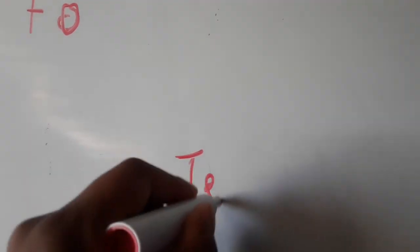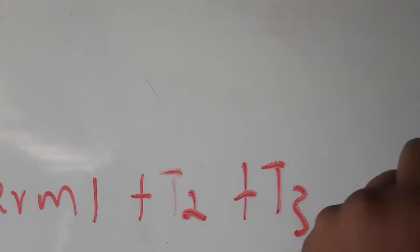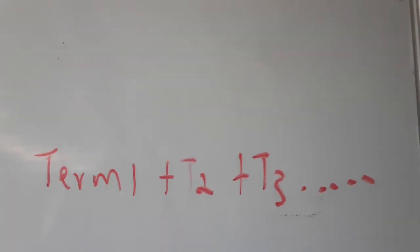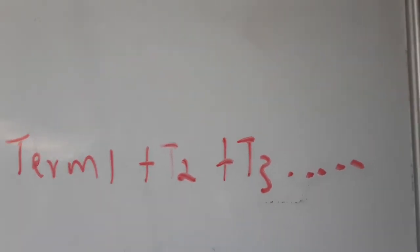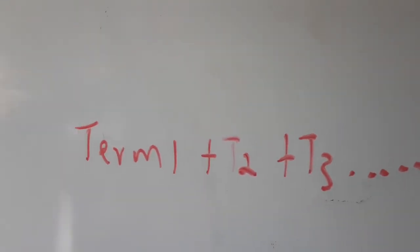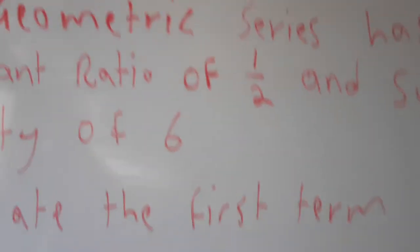The sum to infinity means we take the first term t1, plus the second term t2, plus t3, and they go on and on. You keep adding these terms to infinity — they continue without end.